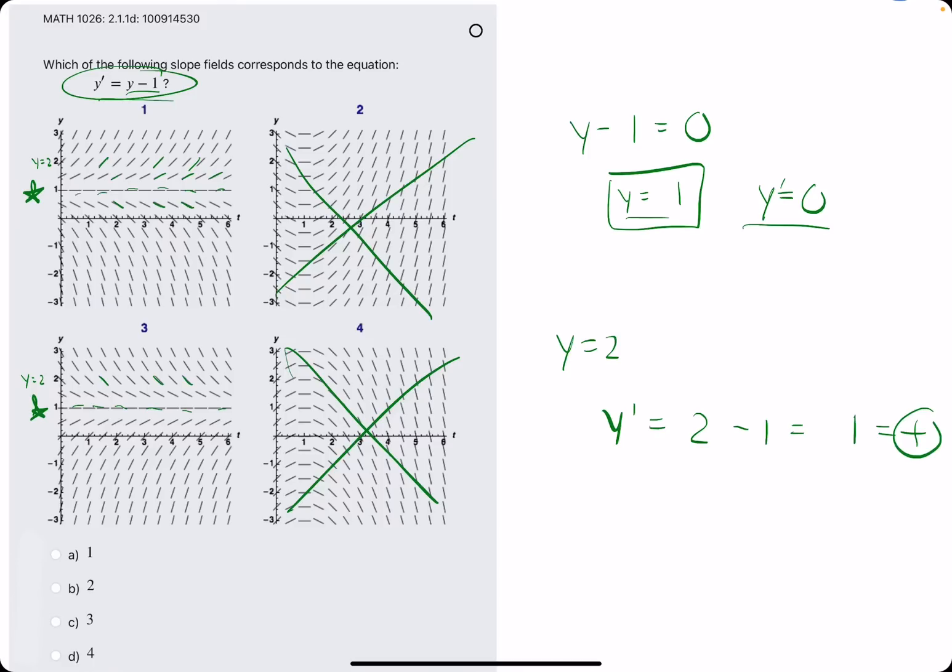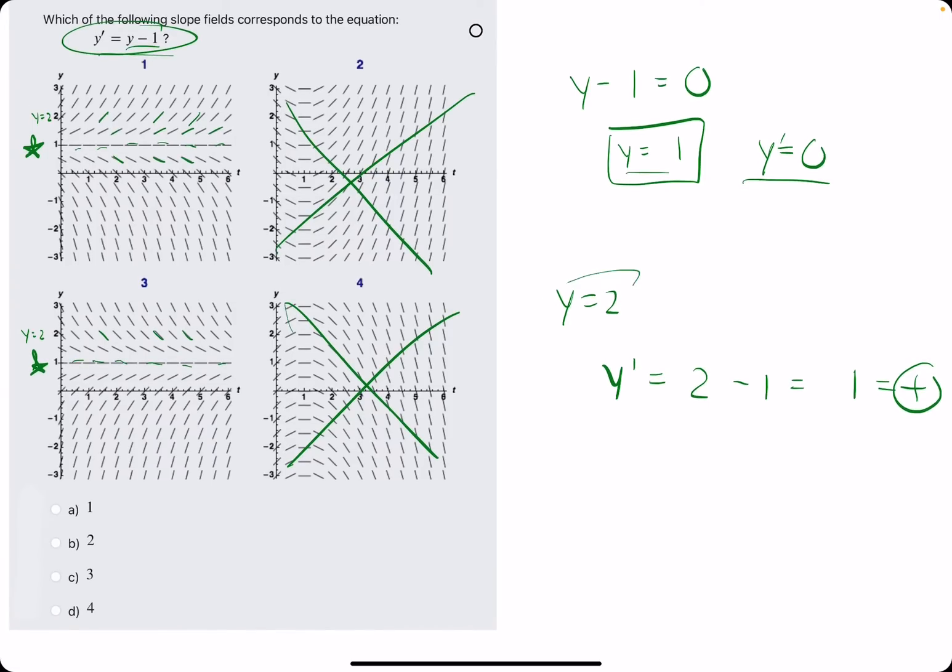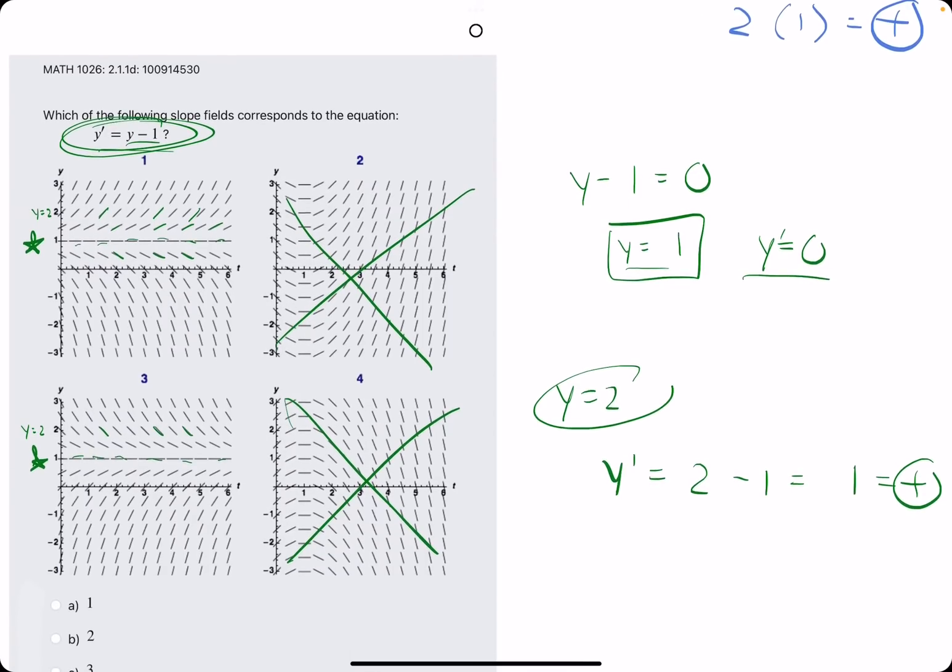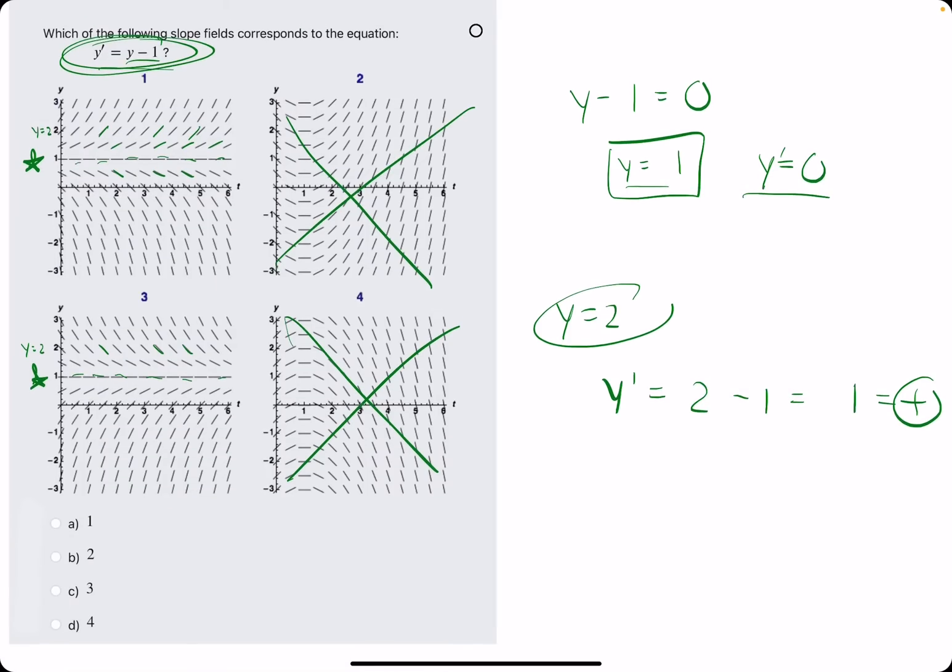More importantly, that is positive. Based on this equation y' = y - 1, at y = 2, we should have positive slopes.